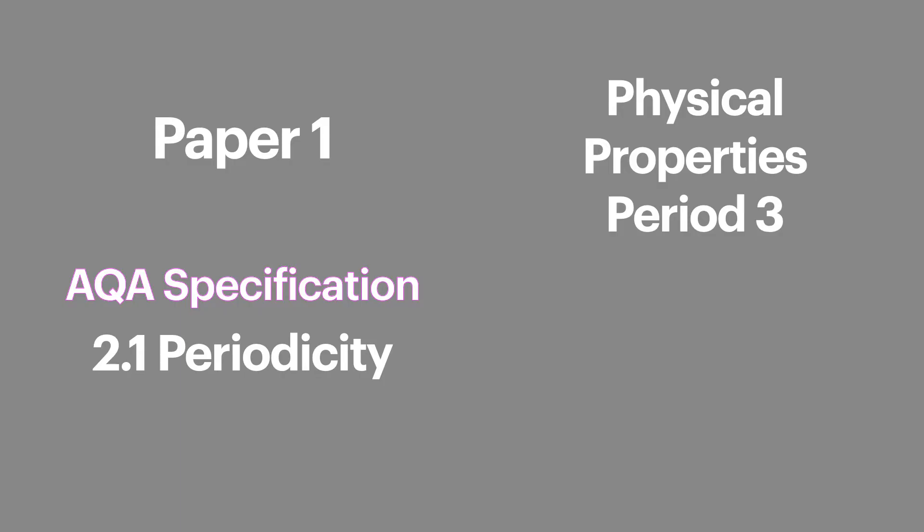Hello chemists and welcome to Bale's Chemistry. In this episode we're going to look at the trends across period 3. This includes atomic radius, ionization energy and their melting points. This is AQA specification 2.1 periodicity and is covered on paper 1 of your final exams.